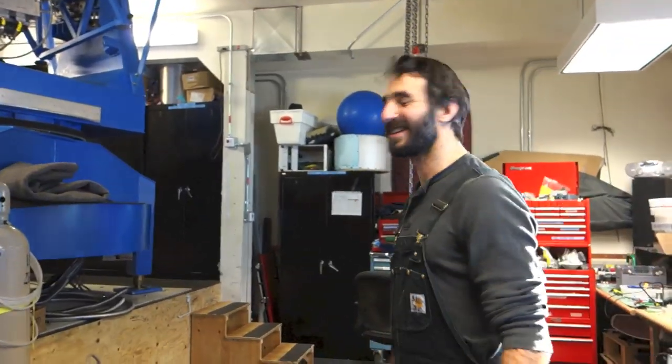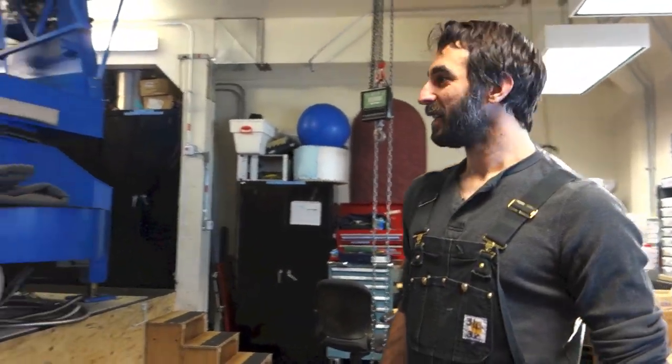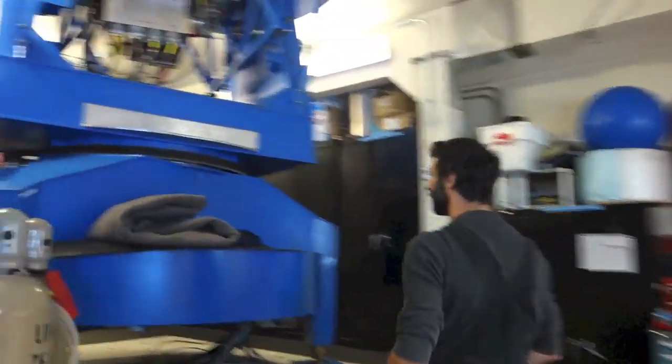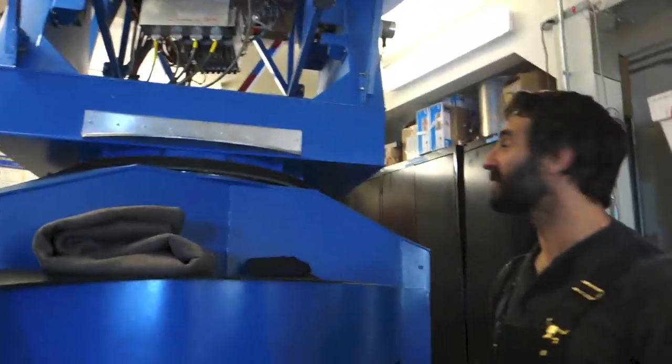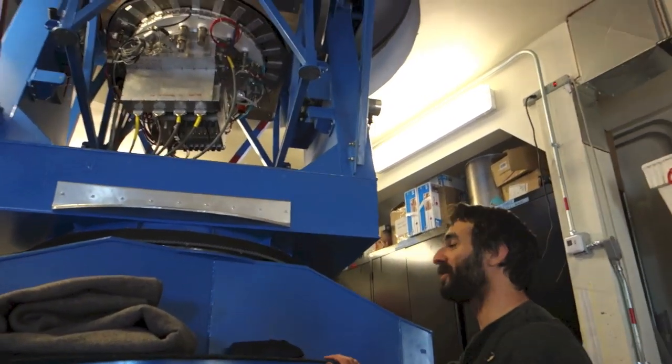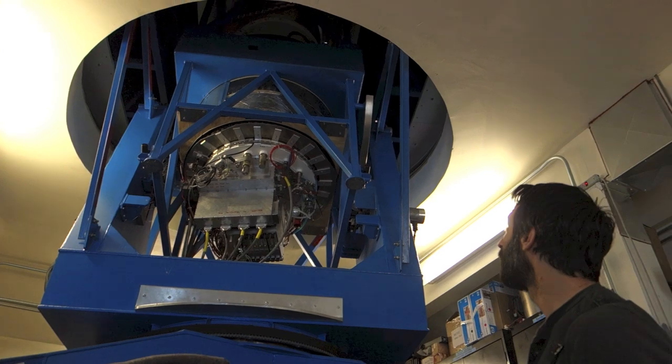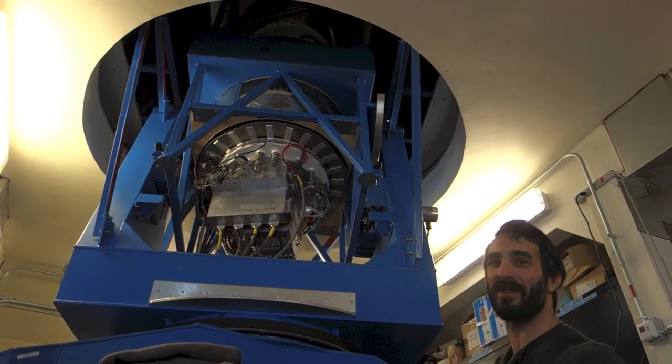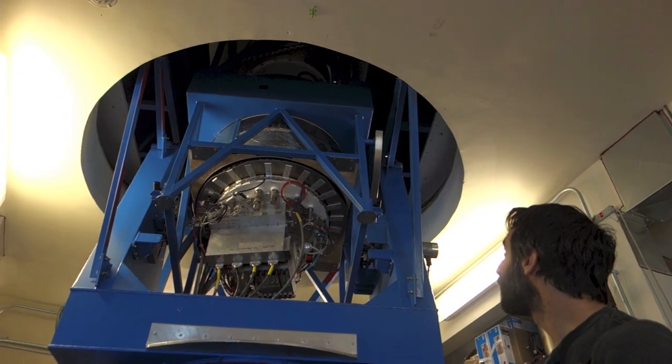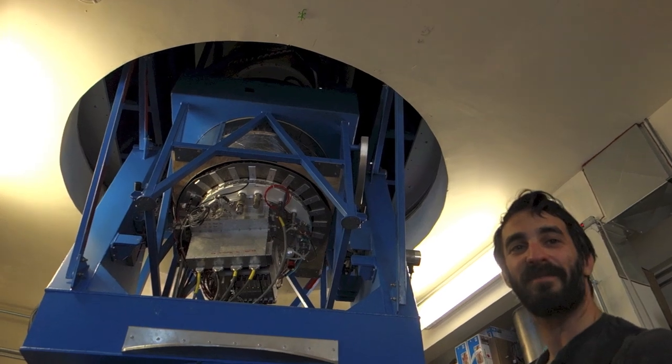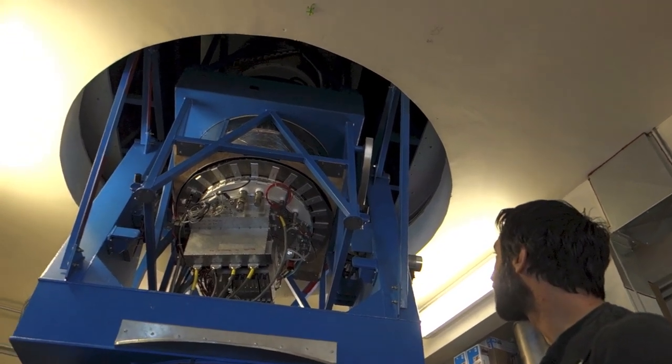This is BICEP2. So this is the mount which holds the telescope and moves the telescope around. This was the same mount used for BICEP1, and it's doing a great job. You can see the receiver up there. Did you have to change anything on the mount to get it ready for BICEP2? Just the cable wrap on the inside.